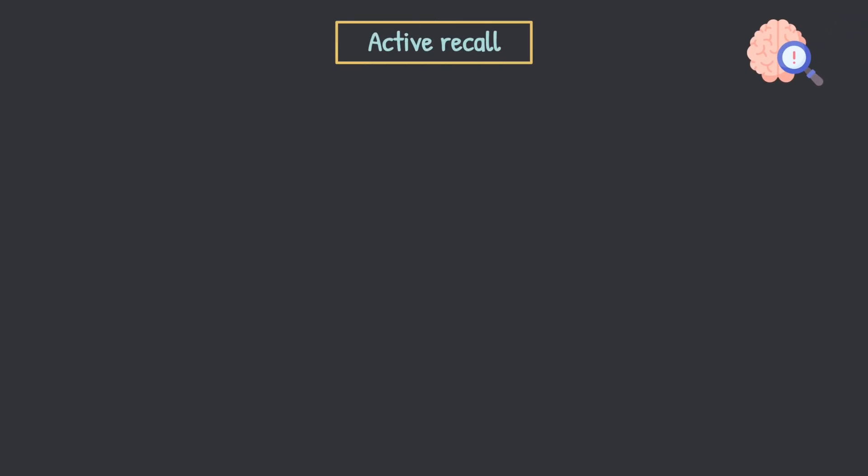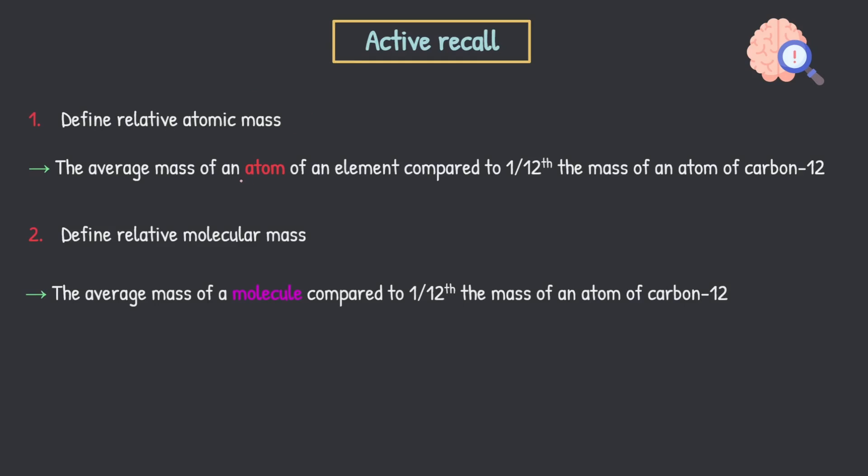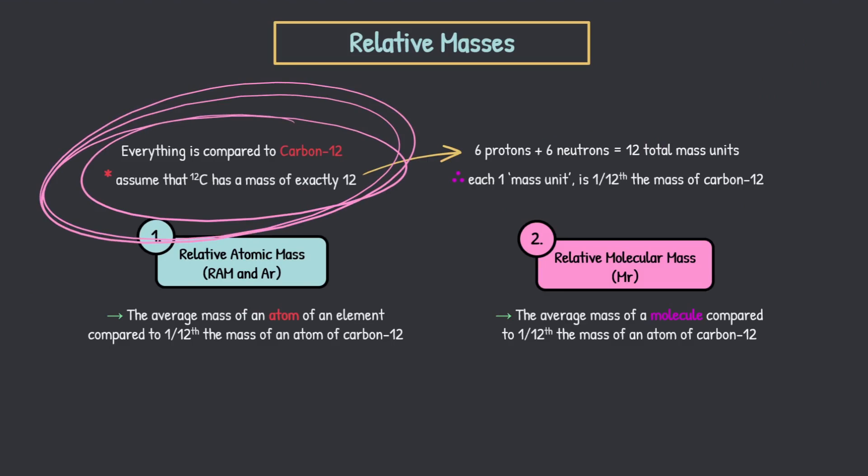Time for some active recall as in all the videos. And here, honestly, it's just two definitions you need to know. Everything else is calculation or math based. And you don't really want to use active recall or flashcards for that. You just want to be doing past paper questions. So can you define these things? Relative atomic mass and relative molecular mass. The first one here is the average mass of an atom of an element compared to one twelfth the mass of an atom of carbon 12. And then molecular mass is the average mass of a molecule compared to one twelfth the mass of an atom of carbon 12.